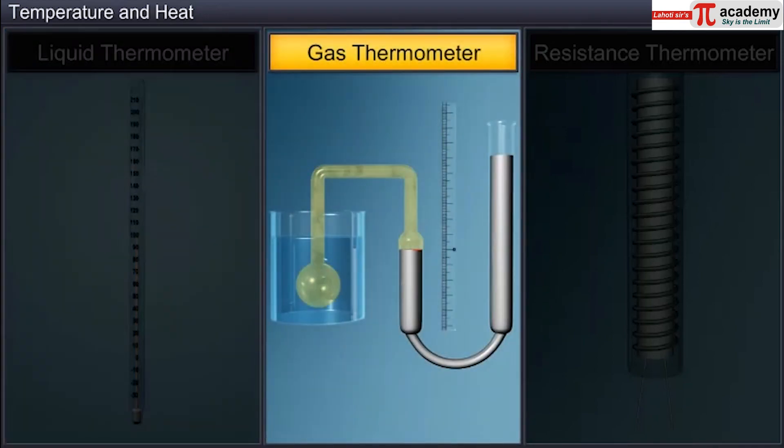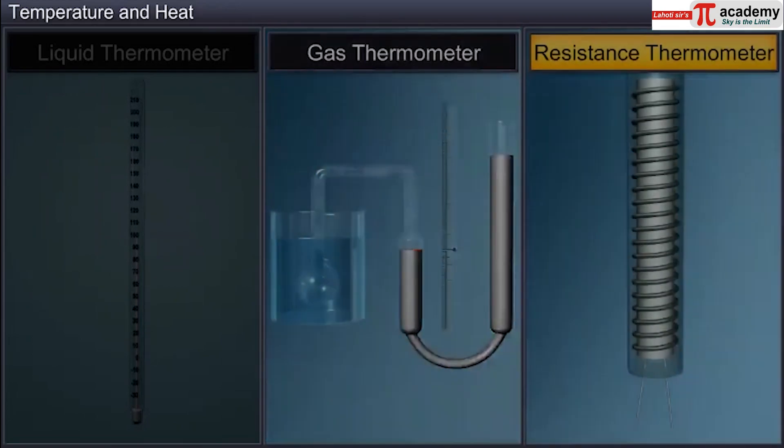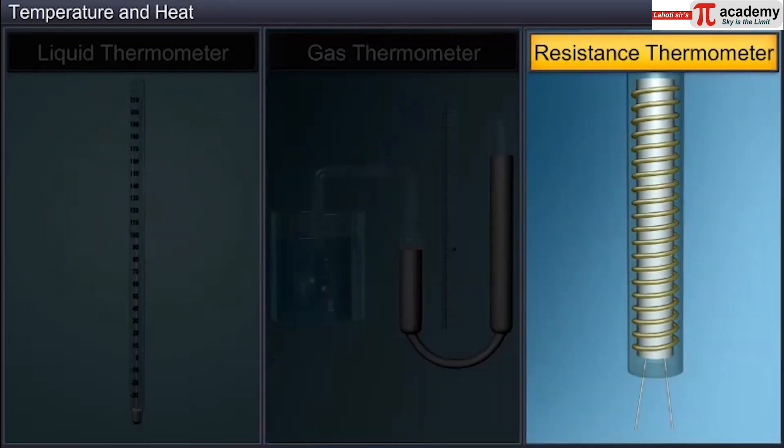Pressure of the gas in a constant volume gas thermometer and resistance of a platinum wire used in resistance thermometer changes linearly with the change in temperature.